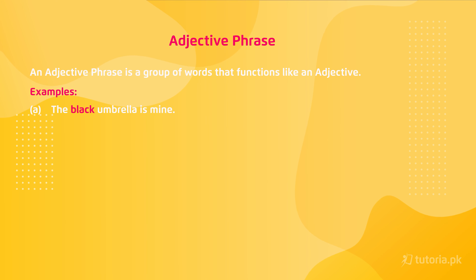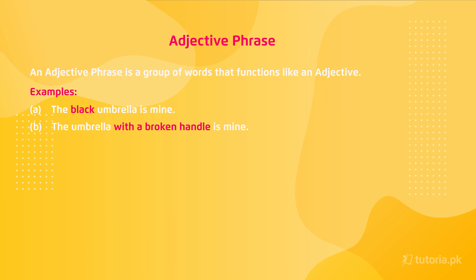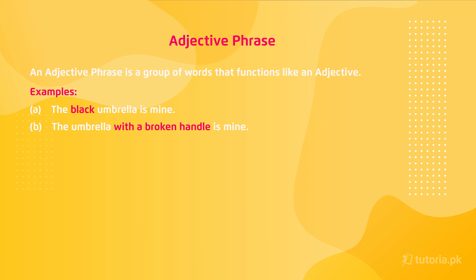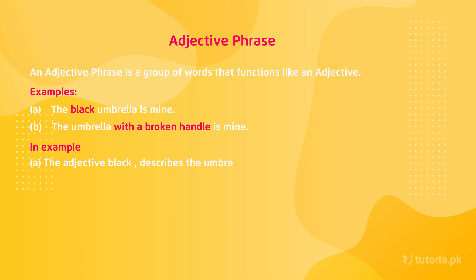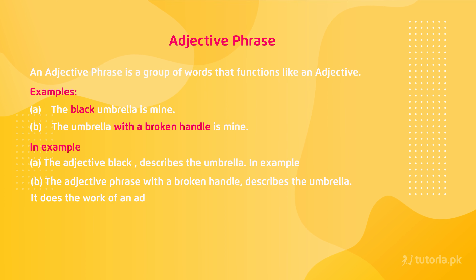When we use an adjective phrase, for example: 'The umbrella with a broken handle is mine' — here 'with a broken handle' is the adjective phrase. It describes the noun 'umbrella', telling us which umbrella is mine — the one whose handle is broken. So in example A, the adjective 'black' describes the umbrella; in example B, the adjective phrase 'with a broken handle' does the work of an adjective.